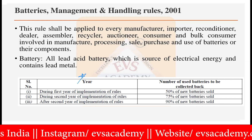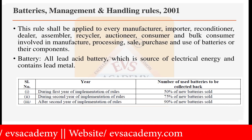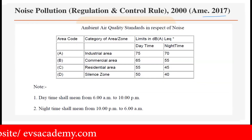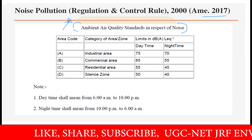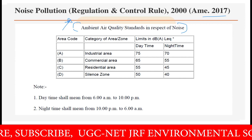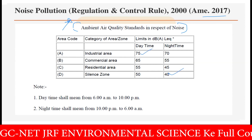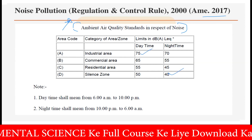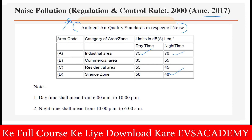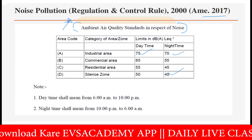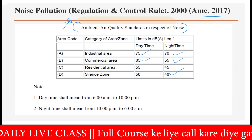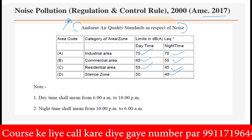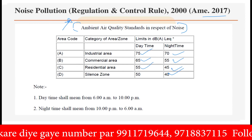The Noise Pollution Regulation and Control Rule of 2000 was amended in 2017, and ambient air quality standards with respect to noise are provided. The categories of area zones are A, B, C, and D, ranging from 75 down to 40 decibels. Industrial areas have a 75 dB limit daytime and 70 dB nighttime. Commercial areas have 65 dB daytime. Residential areas have 55 dB daytime and 45 dB nighttime. Silence zones allow only 50 dB daytime and 40 dB nighttime.